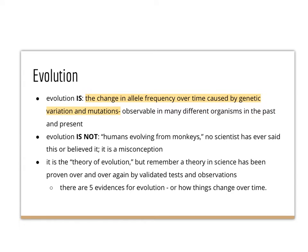Evolution is the change in allele frequency over a period of time caused by genetic variation and mutations. It is observable in many different organisms in the past and present. Alleles are the things that make up genes, and frequency is how often something happens. So evolution is just things changing over time — that's what evolution is.